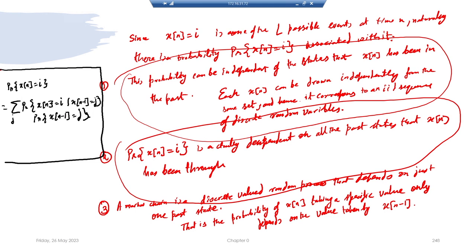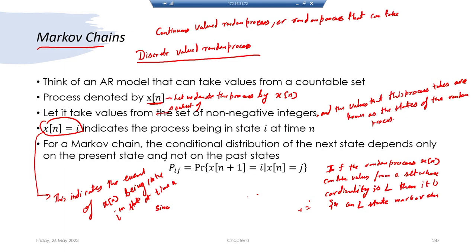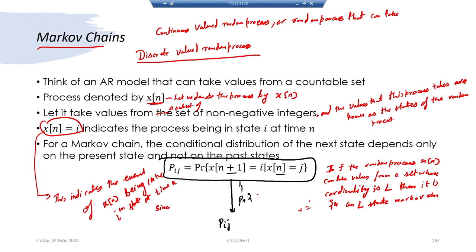This comes from Bayes' theorem: the probability of X_n being in state i given that X_{n-1} was in state j, times the probability that X_{n-1} was in state j, summed over all states j. For a Markov chain, we denote the transition probability of X_{n+1} being i and X_n being j as p_{ij}. We consider this a wide-sense stationary process, so the probabilities remain independent of time.